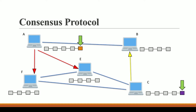So now A is having a different block and C is also having a different block. After this, A and C will transfer this information to their nearest nodes. In blockchain terminology we call these systems as nodes. C will transfer this information to B — its closest node — and A will transfer this information to F and E, which are the closest nodes to A.